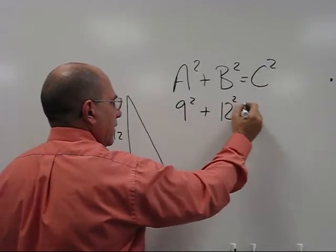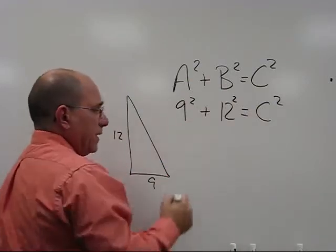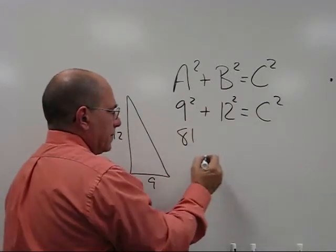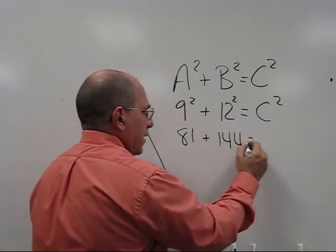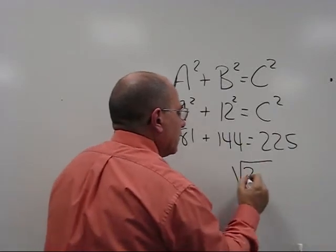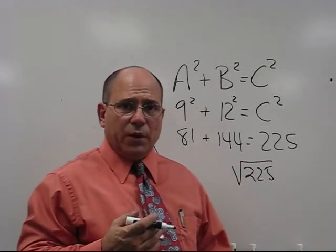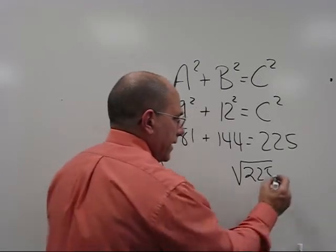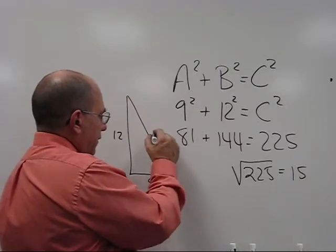9 squared plus 12 squared equals C squared. 9 times itself equals 81, and 12 times itself is 144. That equals 225. Now we find the square root of 225 - some number that was multiplied times itself to equal 225. For most of you, you know that's 15. That means this side is 15.